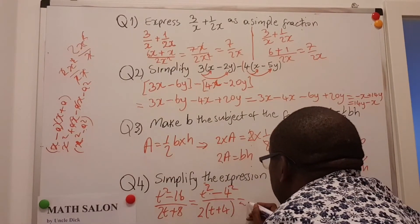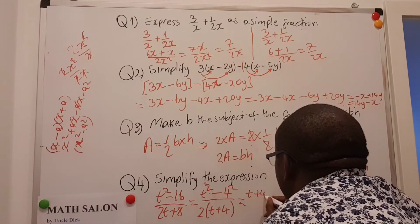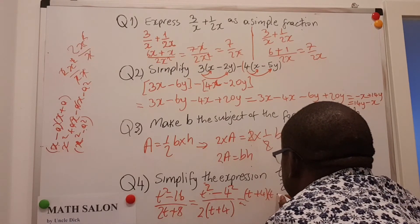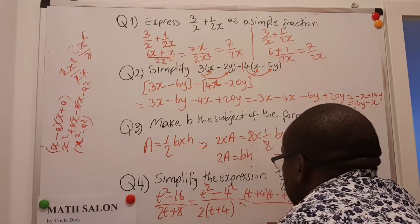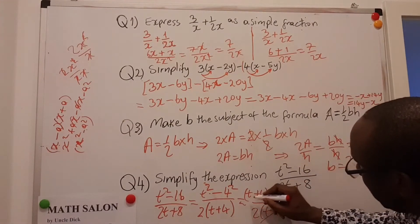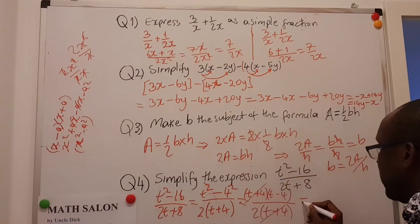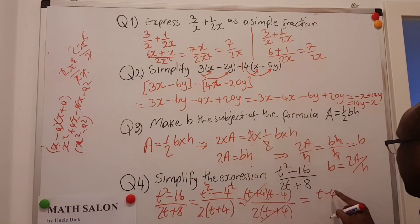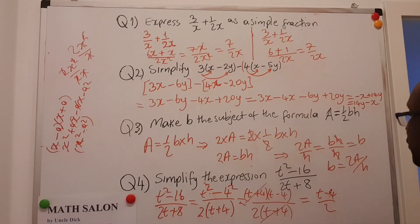then this is going to be T plus 4 times T minus 4 divided by 2(T plus 4). And notice that there's T plus 4 here and there's T plus 4 there. So this becomes T minus 4 divided by 2.